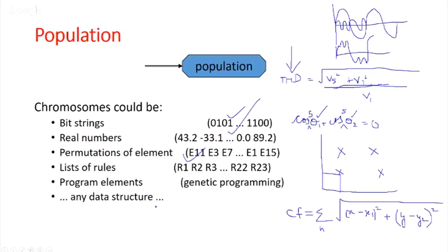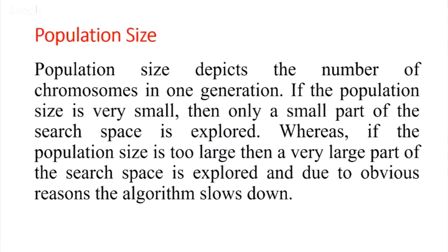There is no exact formula to tell you what the population should be. Many times, for a particular type of problem like power system optimal location, we search papers — mostly 30 or 40 is the population size used — then we cut down and choose the exact population. Population size depicts the number of chromosomes in one generation. A generation is nothing but the number of iterations — you choose one population, make them undergo crossover, mutation, and evaluation: that is one generation. After that you select a set and send them to the next generation.